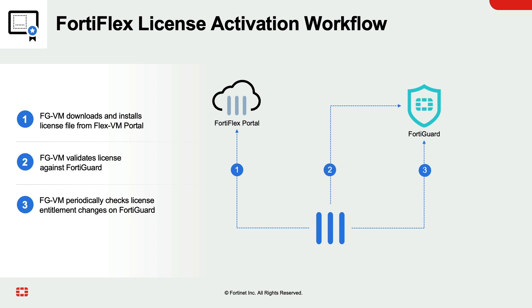After the reboot, the FortiGate VM validates the license against the FortiGuard server. The FortiGate VM periodically checks for changes in the license entitlement — for example, adding or removing vCPU or changing security services.